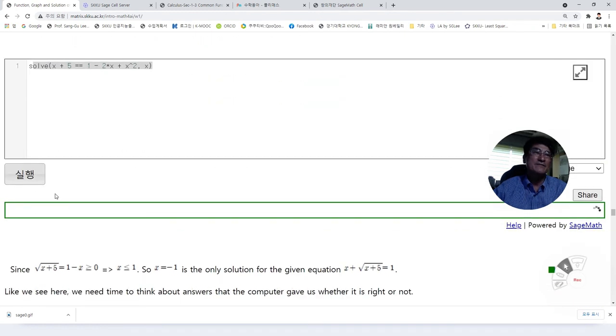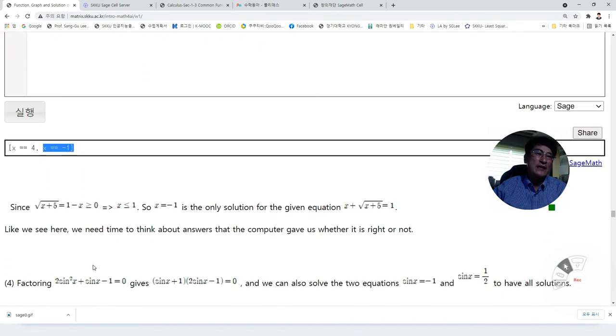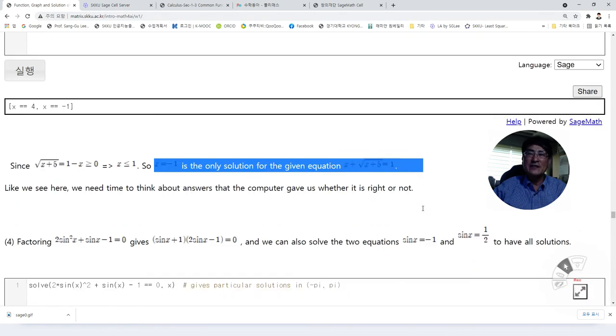So solve this with the same command that we have learned. Then we will have the answers. But since we have square root in the equation, we know x cannot be bigger than one here. So we have two solutions like this. But x is equal to four does not satisfy this. Because inside of square root should satisfy this. So x should be less than one. So this is excluded.